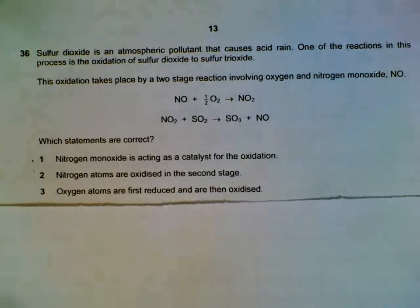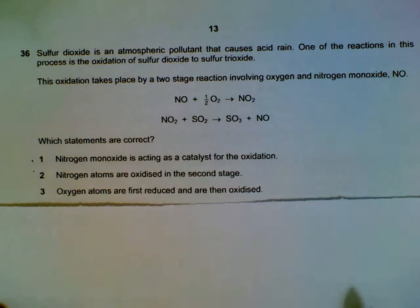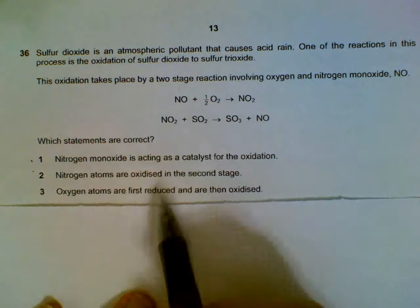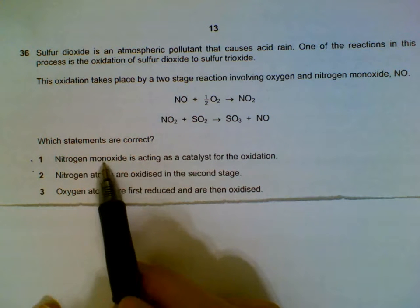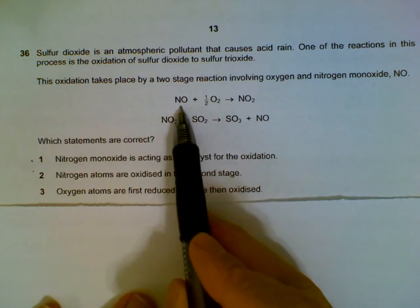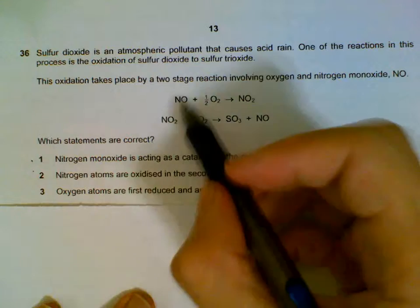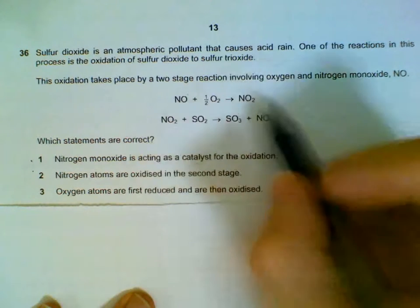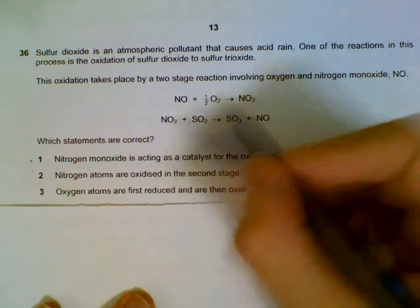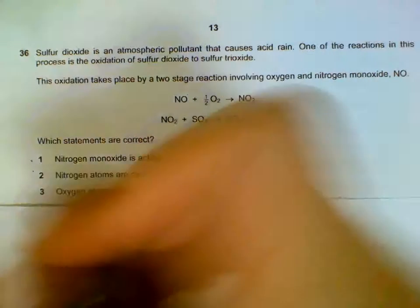Sulfur dioxide is a pollutant, and these two reactions show how it can form sulfur trioxide. Which statements are correct? Nitrogen monoxide is acting as a catalyst. You will realize that nitrogen monoxide is used up during the reaction and then regenerated during the reaction at the end. Or if you were to combine the two, it actually cancels out. So when we write out the balanced equation, nitrogen oxide doesn't appear at the end. So nitrogen oxide is actually a catalyst.